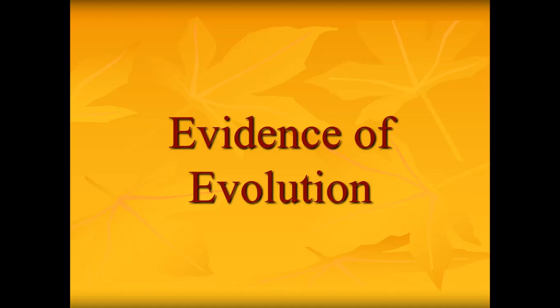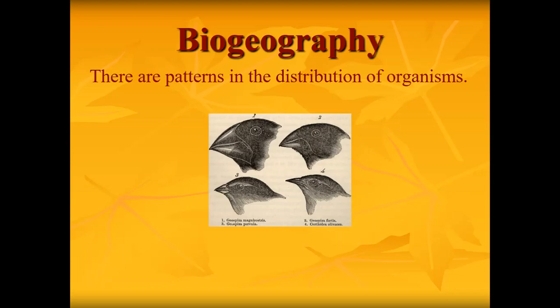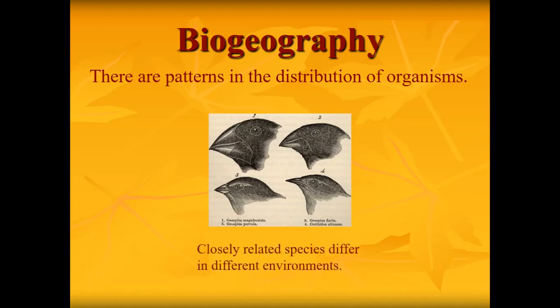Let's talk about evidence of evolution. Biogeography refers to the patterns and distributions of organisms based on where they are actually living. Organisms can be closely related but have differences in their appearance or adaptations because they live in different environments.